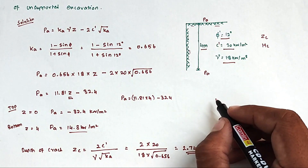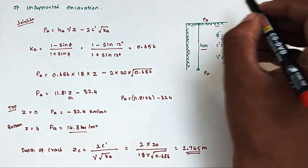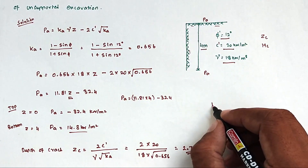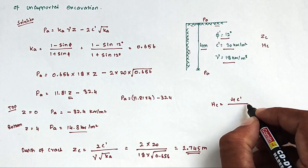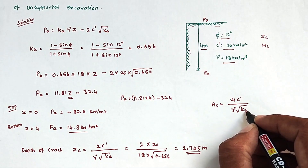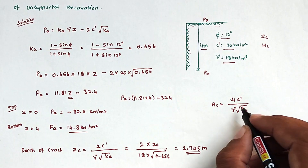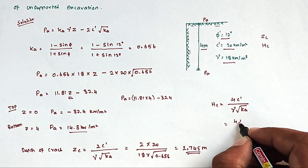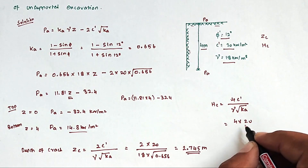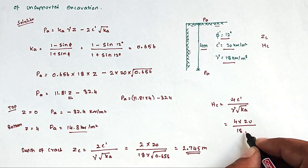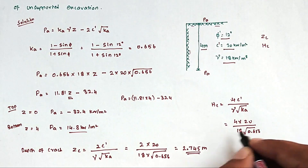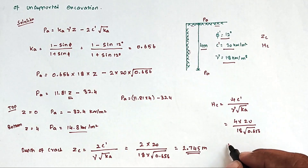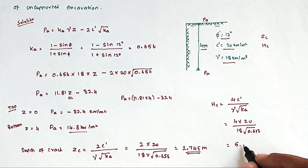Next, we find the maximum depth of unsupported excavation. The formula is Hc = 4C′ / (γ × √KA). Substituting: Hc = (4 × 20) / (18 × √0.656). Note that Hc = 2 × Zc. Solving, we get Hc = 5.490 meters.